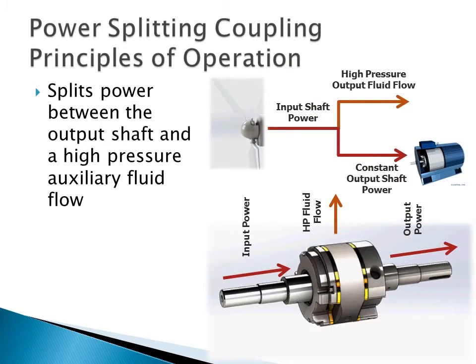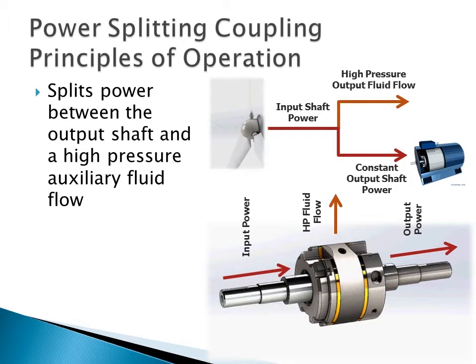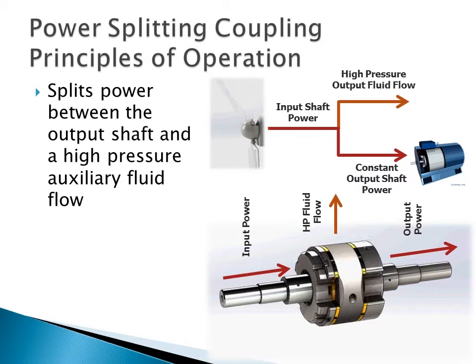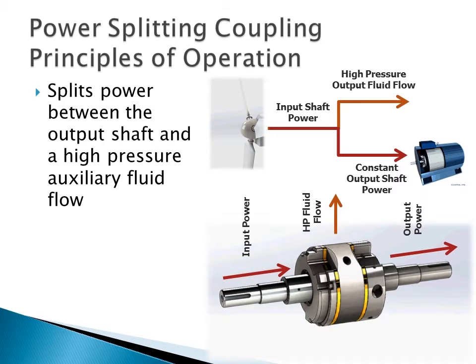The power split coupling is a simple concept in which, for any quantity of power supplied to its input shaft, its output shaft can be controlled to the precise amount of output torque or rotational speed required. What sets the Mathers power split coupling apart from other common technologies such as torque converters used in automatic transmissions is that any energy not transferred to the output shaft can be redirected to storage or auxiliary uses in the form of high pressure hydraulic flow.